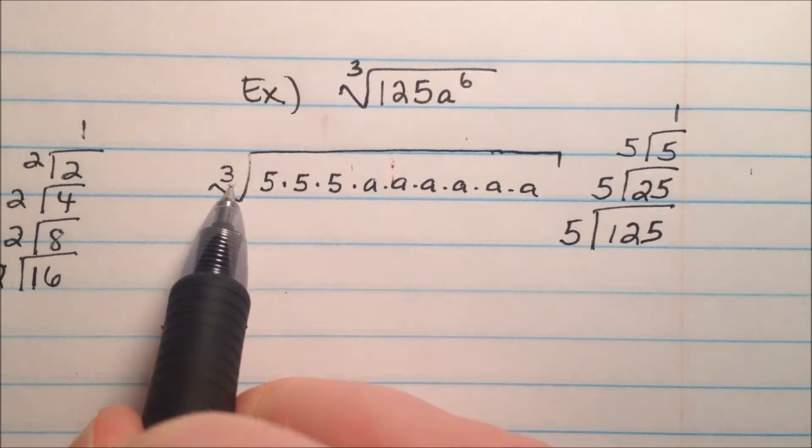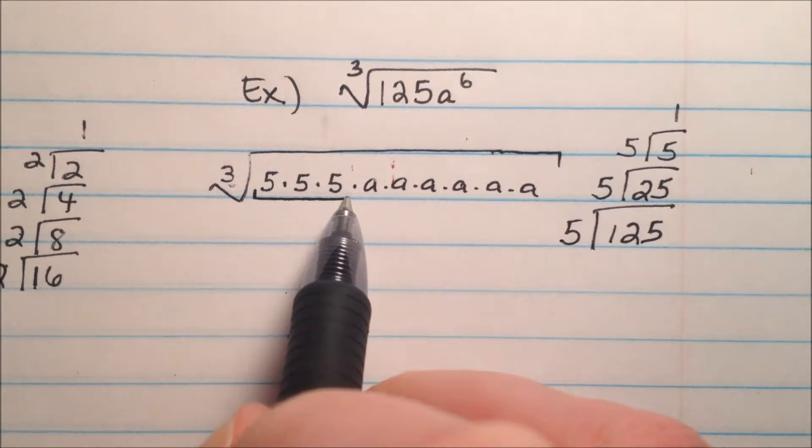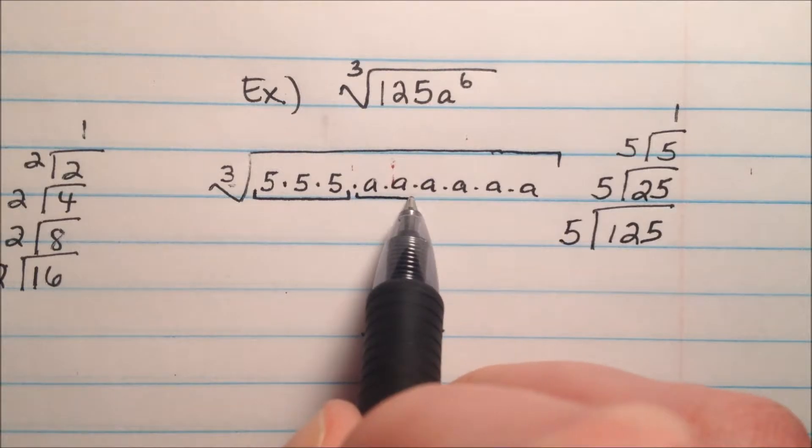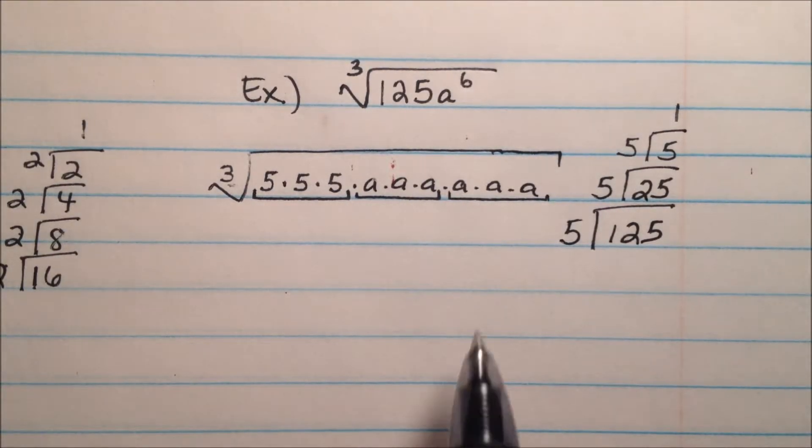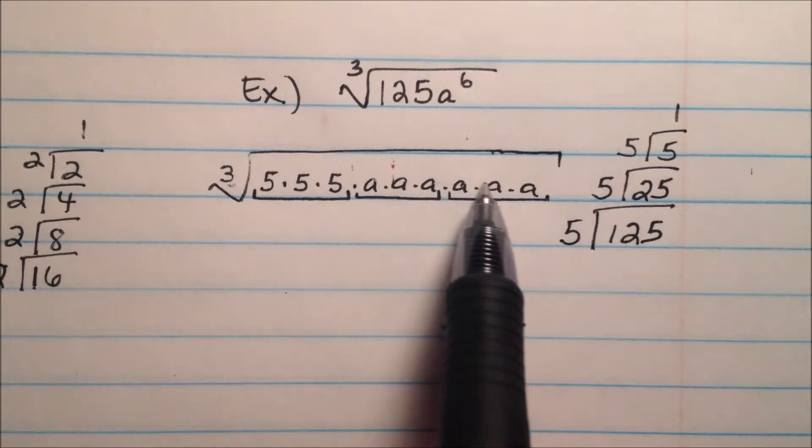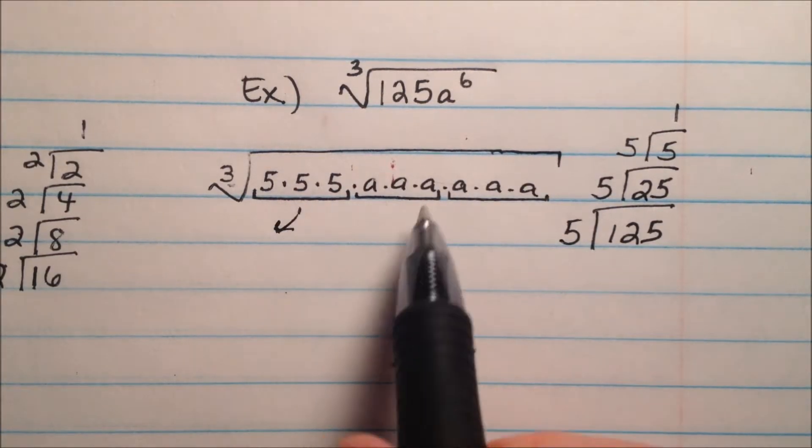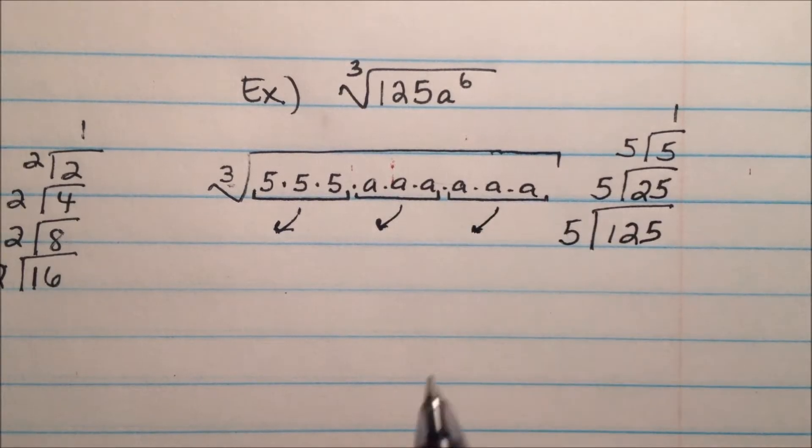So we're looking for groups of 3. So here appears to be 3 5's, here's a group of 3 a's, and here's another group of 3 a's. And it looks like every single factor that's in here gets to be grouped up and gets to come out. Which means, since there's nothing left over, we won't need the radical in our answer.